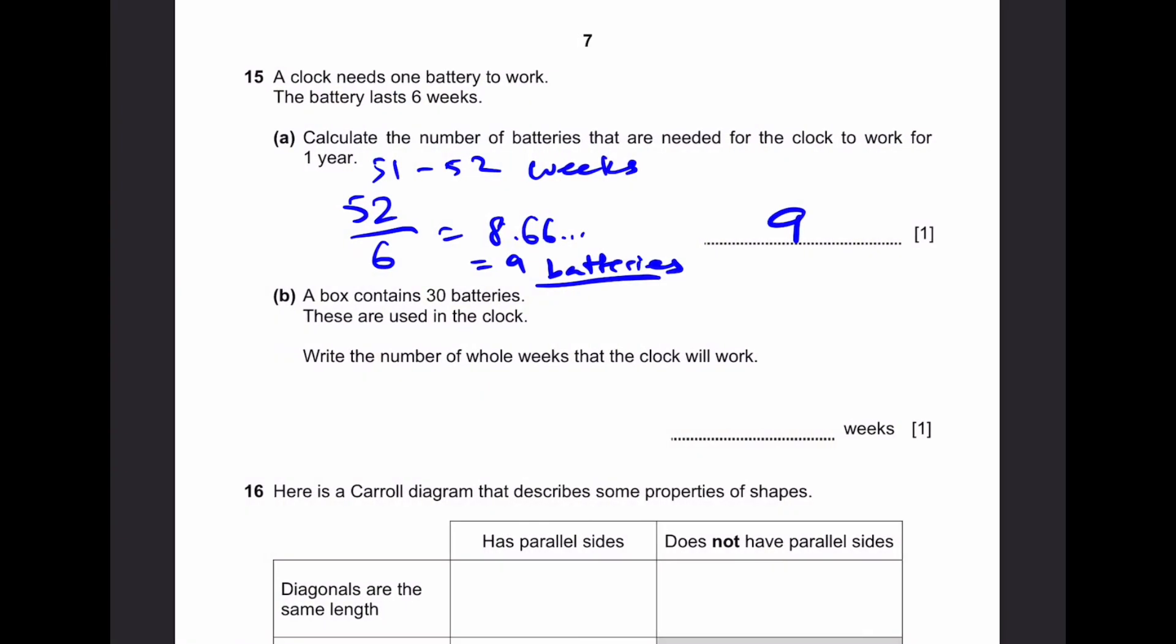Let's go to part B. One battery lasts six weeks. So 30 batteries will last 30 times 6, which is 180 weeks. That's the answer. Let's go. Thank you.